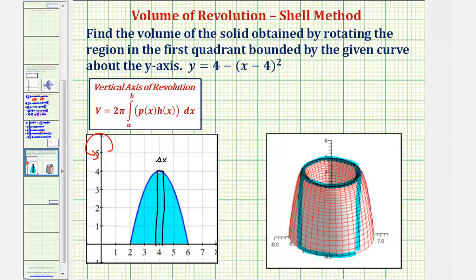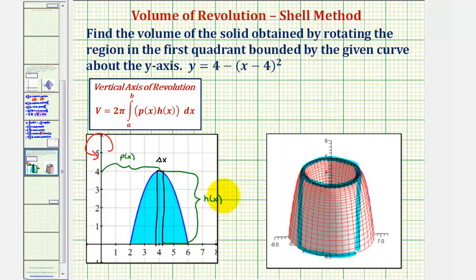This is why we integrate with respect to x, where p of x would be the distance from the center of the rectangle to the axis of rotation, which would be this distance here. Notice p of x is just the horizontal distance along the x-axis. So p of x equals x, and h of x would be the function value given by four minus the quantity x minus four squared. Now we have all the information we need to set up our integral.